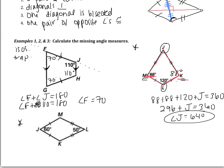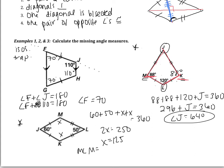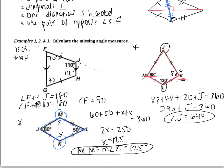Let's see how we did. This is a kite again — two pairs of congruent consecutive sides. So there's one pair of opposite angles that are congruent. Since 60 and 50 are not congruent, M and K are going to be congruent — call them X and X. All four angles add up to 360, so 60 plus 50 plus X plus X equals 360. This gives 2X equals 250, so X equals 125. The measure of angle M and angle K are both 125 degrees.